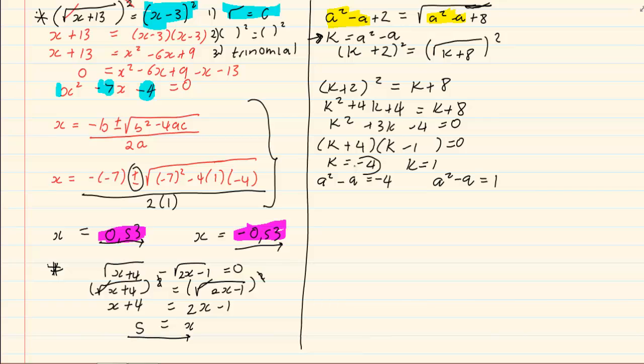So we substitute a squared minus a is equal to minus 4. So basically we're taking the minus 4 and we're putting it back in place of k. And then we're doing the same thing with the 1. We're taking out the 1 and we're putting it back in place of k.